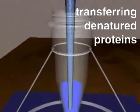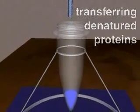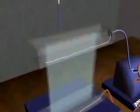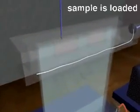The mixture of denatured proteins is then transferred from the tube and loaded into a well that has been cast in the top of a polyacrylamide gel.